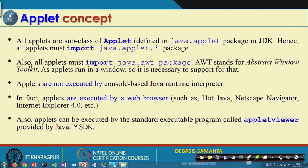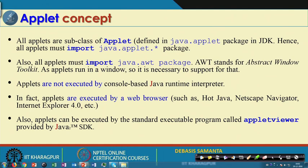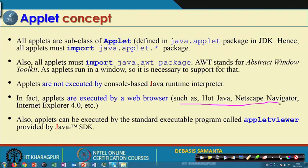We have to import the java.applet package first whenever we write an applet, and then override the required methods. Another important difference between an applet and a general program is that for a Java application we use the java command, whereas for an applet we need a separate program called the applet viewer. The Java runtime interpreter is not applicable to the applet; instead, the applet needs to be executed with the help of a browser such as HotJava, Netscape Navigator, or Internet Explorer.